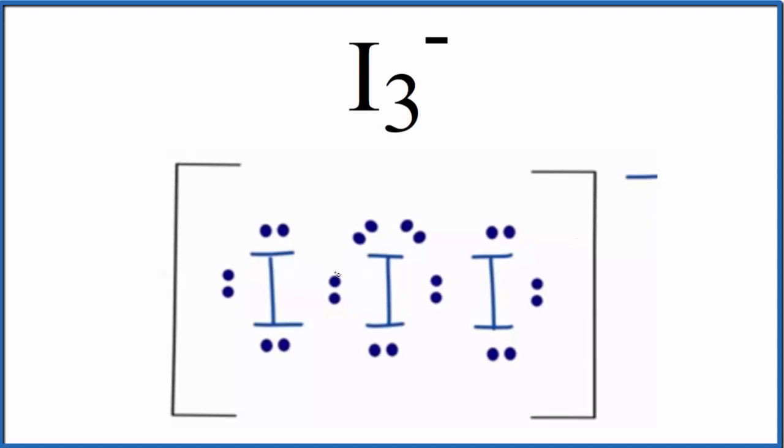So if we look at the Lewis structure here, and we look at this central iodine atom, these electrons right here, the ones between the atoms, these are shared. So these are what we call bonding pair electrons. They're shared in a covalent bond. So bonding pair electrons, we have two pairs.